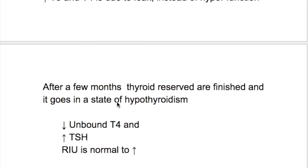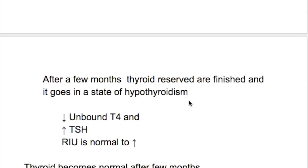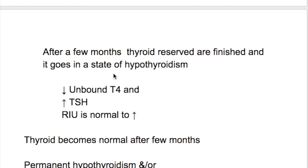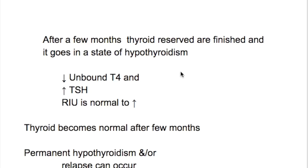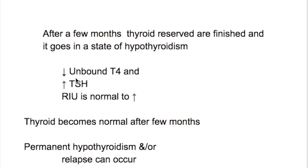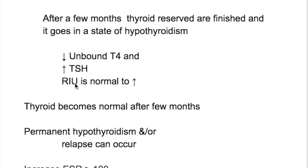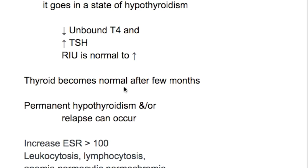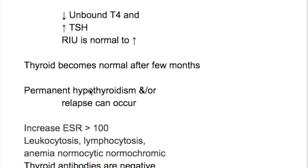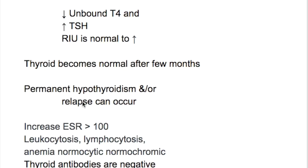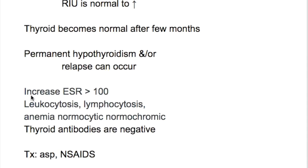After a few months, thyroid reserves are depleted and it goes into a state of hypothyroidism, with decreased unbound T4, increased TSH, and radioiodine uptake that is normal to increased. The thyroid becomes normal after a few months. However, permanent hypothyroidism and/or relapse can occur.